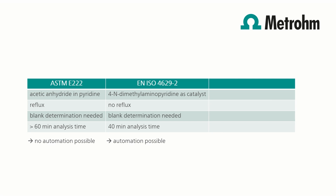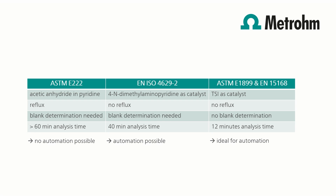The second method, described in ASTM E1899 and EN 15168, uses TSI — paratoluene sulfonyl isocyanate — as catalyst. No blank determination is needed. And with an analysis time of about 12 minutes, the method is much faster than the others described earlier. Let's look at the automation possibility of this method.